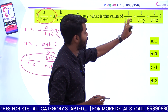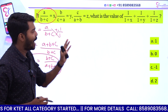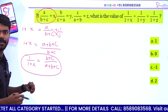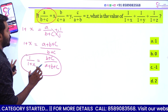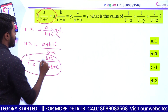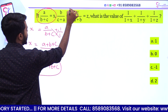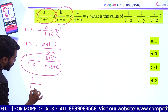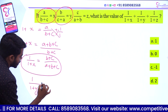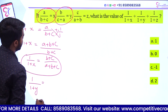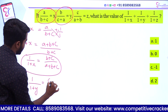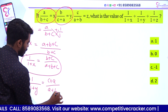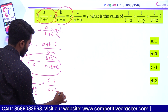Similarly, 1 by 1 plus y is equal to c plus a divided by a plus b plus c.